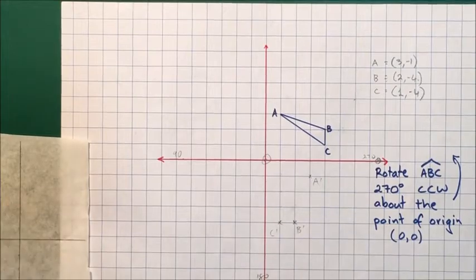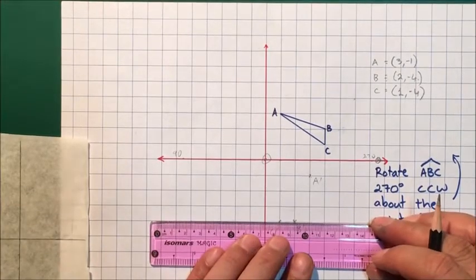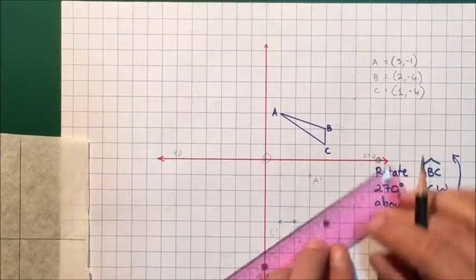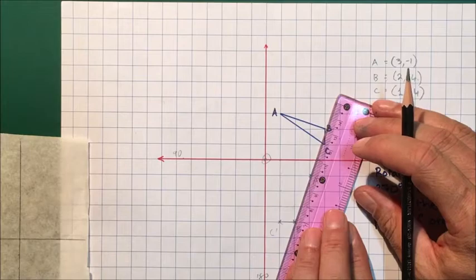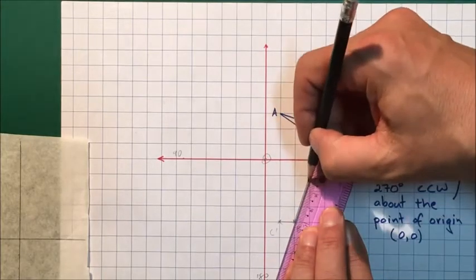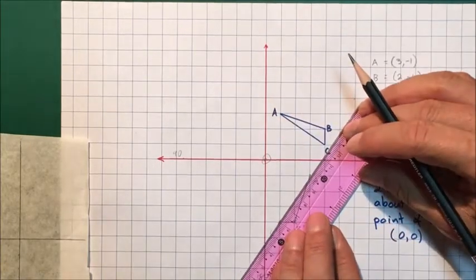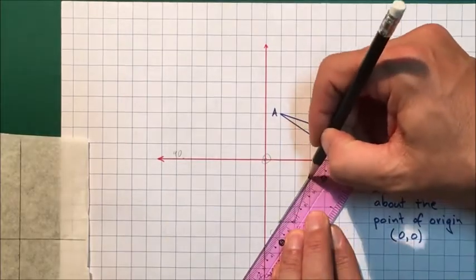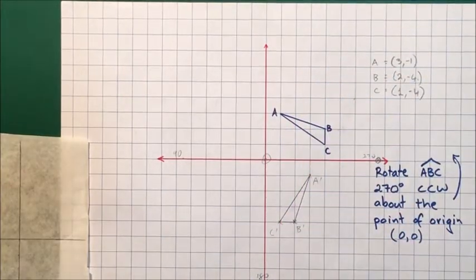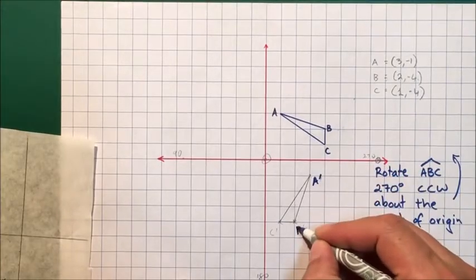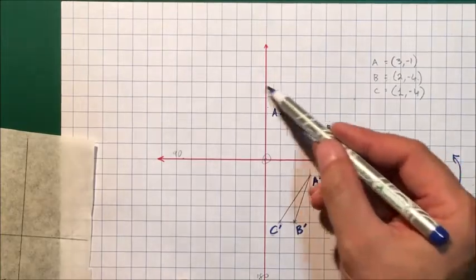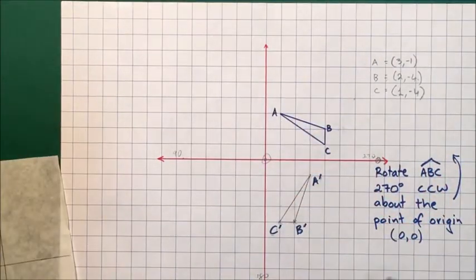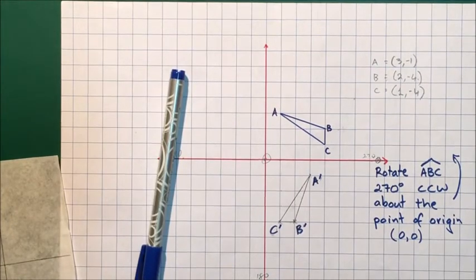So I've got the rotated points. I now have the image of points A, B, and C. I just join them up now, and now I have the image of triangle ABC, which is triangle A'B'C'. That has been rotated all the way around 270 degrees counterclockwise. Job done.